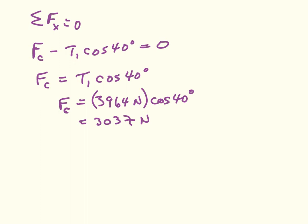So if you were designing a system like this and you wanted to make sure that the sign never moved, you would have to make sure that the rod could withstand 3,037 Newtons of compression force without being damaged. Similarly, the tensile strength of the cable holding up the sign would have to be at least 3,964 Newtons, or else the cable would snap. These are the kinds of things that engineers have to think about when using physics to design these kinds of systems, because obviously we want them to be safe. And that's an introduction to statics.